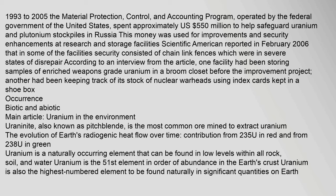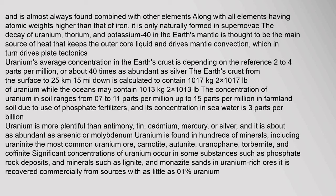Uraninite, also known as pitchblende, is the most common ore mined to extract uranium. Uranium is a naturally occurring element found in low levels within all rock, soil, and water. It is the 51st element in order of abundance in the Earth's crust and the highest-numbered element found naturally in significant quantities on Earth. Along with all elements with atomic weights higher than iron, it is only naturally formed in supernovae. The decay of uranium, thorium, and potassium-40 in the Earth's mantle is thought to be the main source of heat that keeps the outer core liquid and drives mantle convection, which in turn drives plate tectonics. Uranium's average concentration in the Earth's crust is 2 to 4 parts per million, about 40 times as abundant as silver.